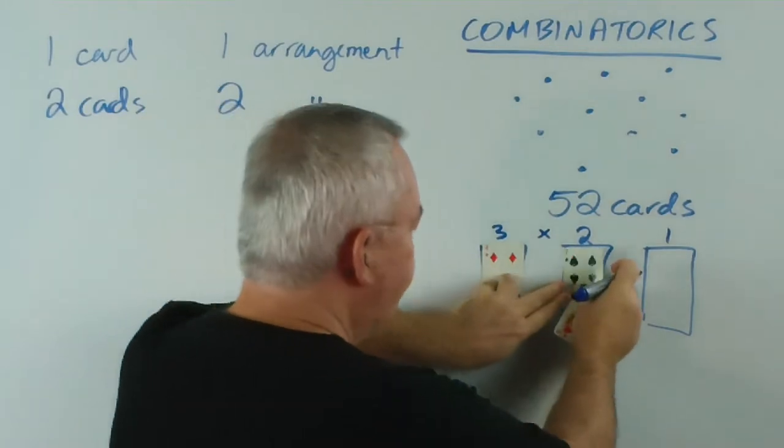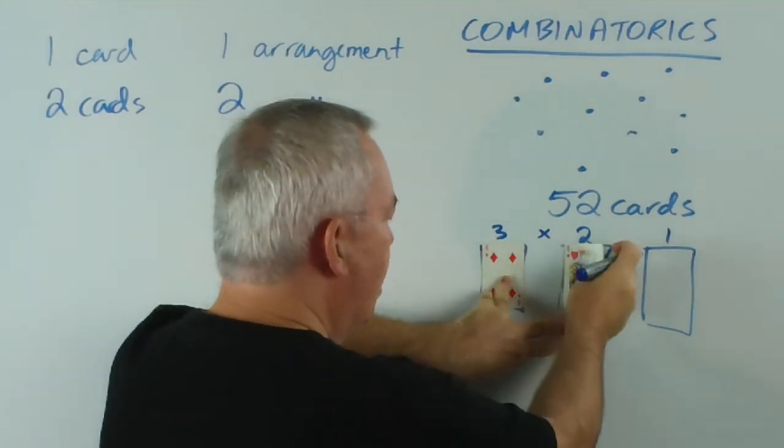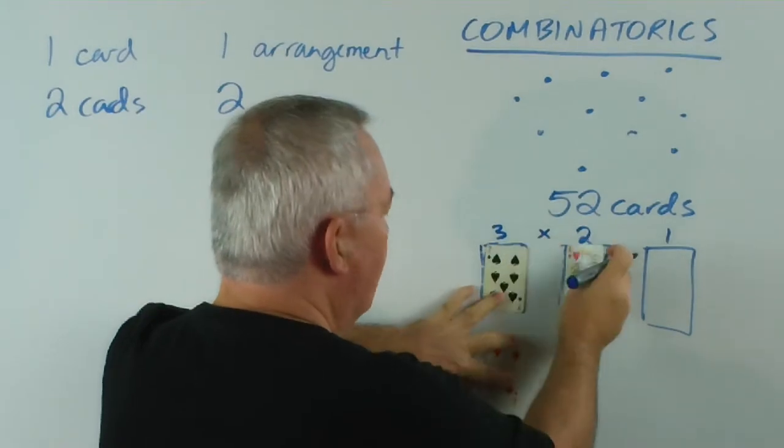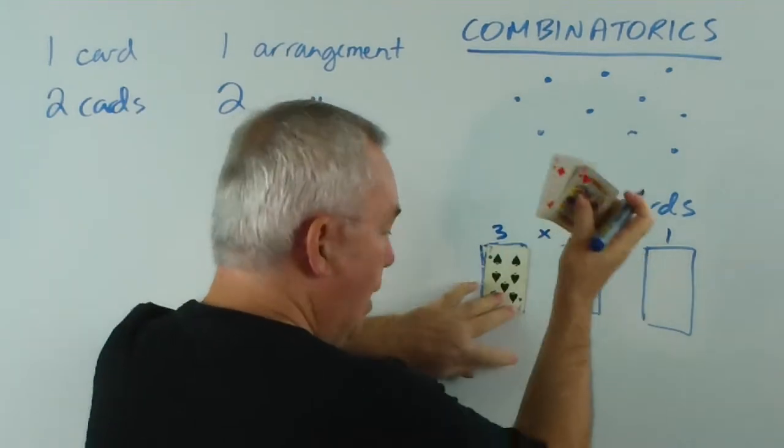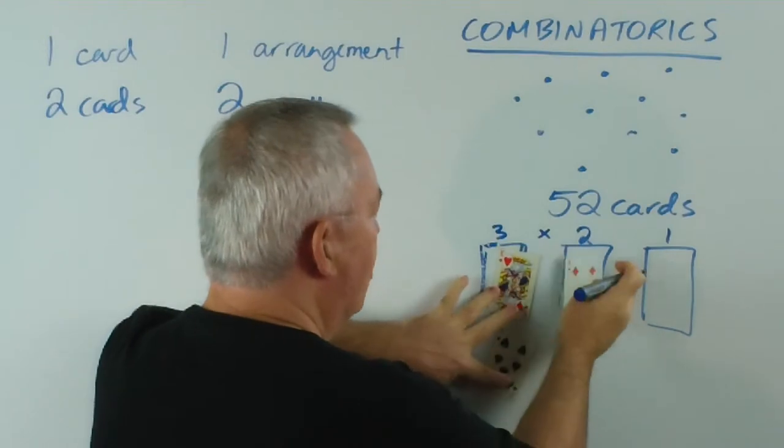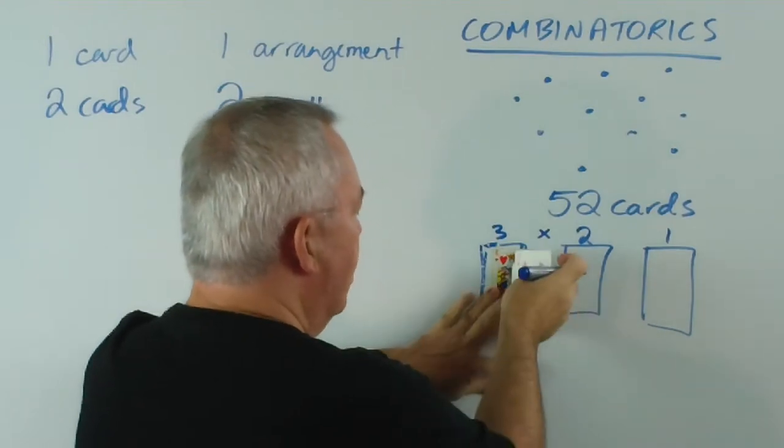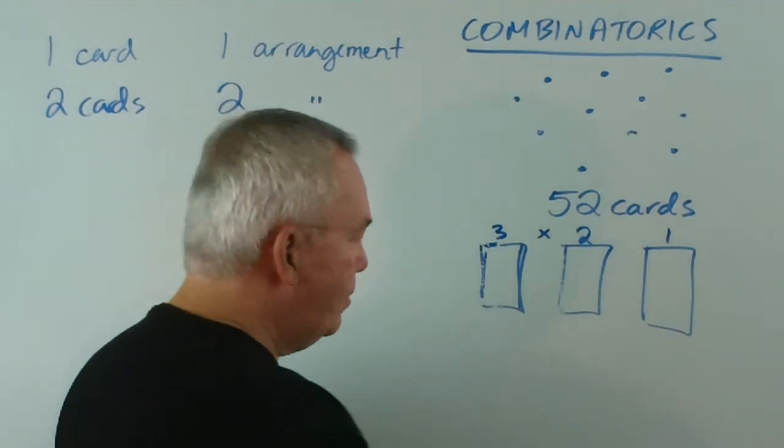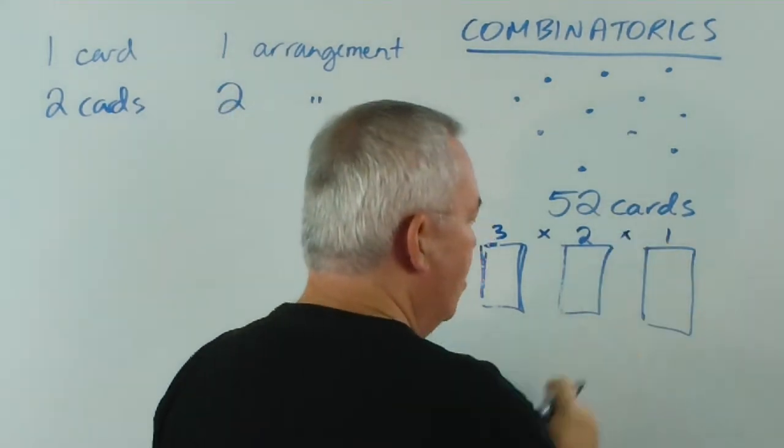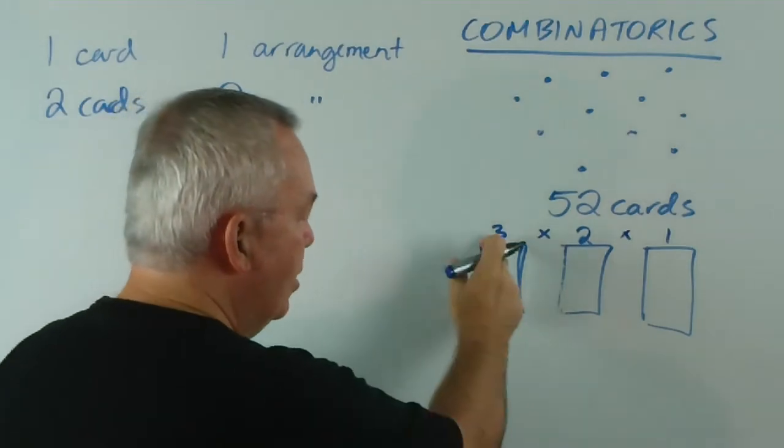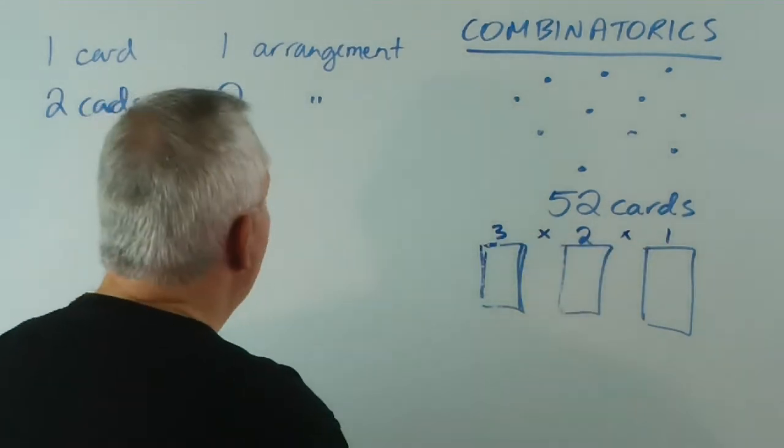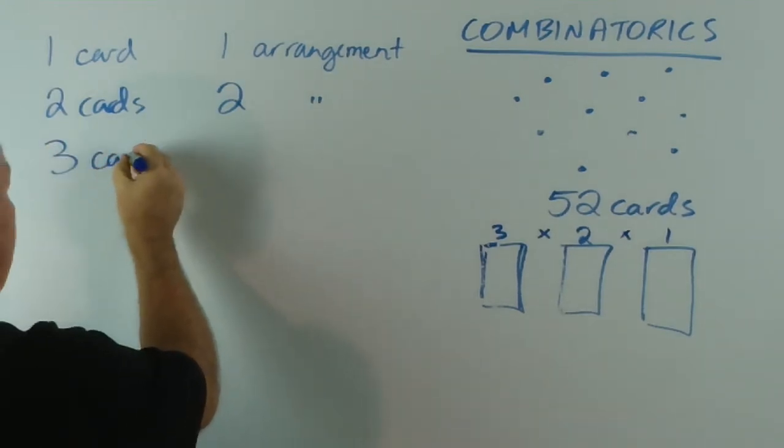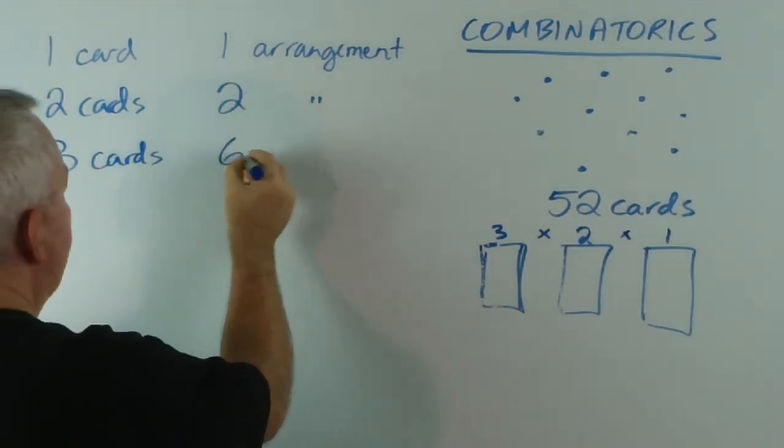And once I've put one of them down, I've only got one card left, so I have a choice of one. And mathematicians say for every one of these three choices, once I've put a card down, for every one of those, I've got two choices here. So, I've got that combination and that combination. So, we multiply. We say there are, in fact, six different combinations. If I put the four here, I could put the seven or the king. That's two. If I put the seven first, I could put the king or the four. That's two. And if I put the king first, I can put the four or the seven. So, for each of the three here, I've got two there, so I have six. And we multiply by the one possibility there. That's a nice little pattern. So, with three cards, we have six arrangements.